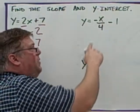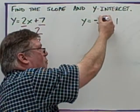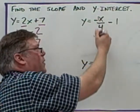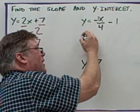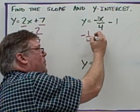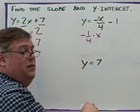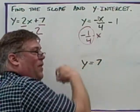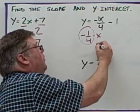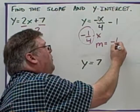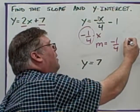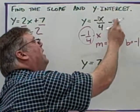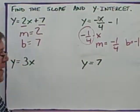In this equation, what is multiplying the x? There is a negative 1 — it is understood to be 1 — over 4, so this is the same as saying negative one-fourth times x. So what is multiplying the x is actually this fraction. The slope is negative one-fourth and the y-intercept is negative 1, because of the negative sign there.